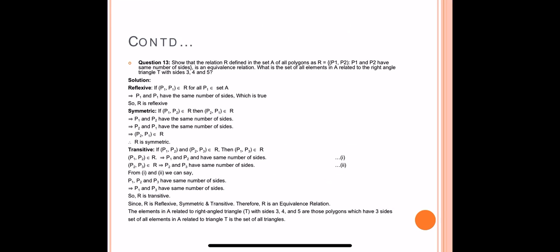Since R is reflexive, symmetric, and transitive, therefore R is an equivalence relation. For the second part: what is the set of all elements in A related to the right angle triangle T with sides 3, 4, 5? The relation is defined by the number of sides. A right angle triangle has three sides, and from three sides we can form a triangle. Therefore the answer is: the set of all elements in A related to triangle T is the set of all triangles.